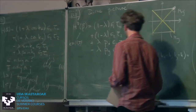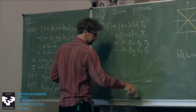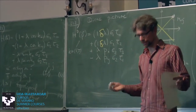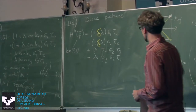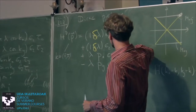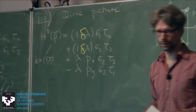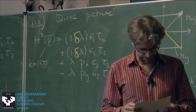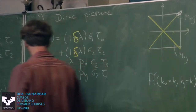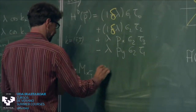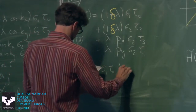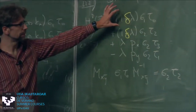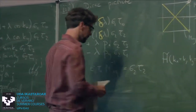This is a 2D Dirac Hamiltonian with two mass terms σ₁τ₀ and σ₂τ₂ that anti-commute with each other and with the kinetic terms. The two mass terms are tuned to be equal because of the mirror symmetry: M_{xy} σ₁τ₀ M_{xy}^{-1} = σ₂τ₂. So we have a Dirac equation with two equal mass terms.